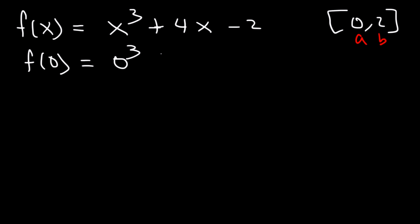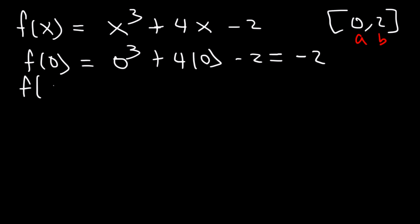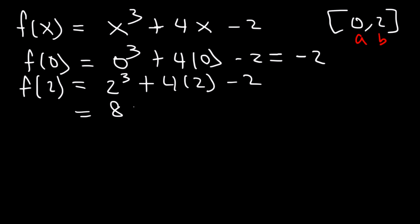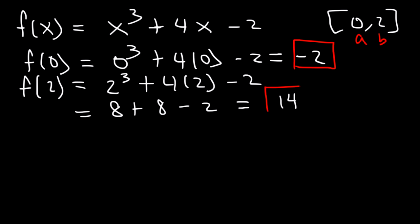So f of zero is going to equal negative two. Now let's find the value of f of b, or f of two, which is two to the third plus four times two minus two. Two to the third is eight, four times two is also eight, eight plus eight is 16, minus two, that's 14. So f of a is negative two, f of b is 14.